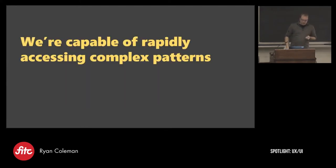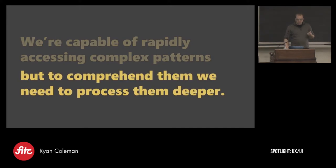So we're capable of rapidly accessing complex patterns, but to comprehend them, we have to process them deeper, and that's the second stage I'm going to talk about. This process is called gisting, for obvious reasons. You kind of get the gist of the scene, but you don't get the detail. You know what's happening. You know quickly, your brain knows if you're in danger or if you're probably safe. Things like that, like all those instinctual things that go on, your brain is doing for you.